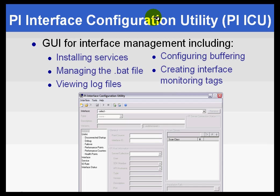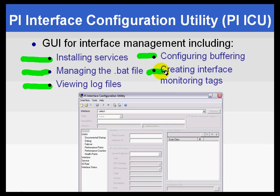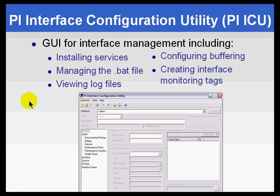The Interface Configuration Utility is another utility launched from within System Management Tools. It allows you to do just about everything needed for interfaces: installing as a service after the regular installation, managing the batch file that passes parameters for how the interface starts up, viewing log files, configuring buffering, etc. We have wrapped all those old-fashioned DOS-based methods into a much more easy-to-use graphical user interface called the Interface Configuration Utility.